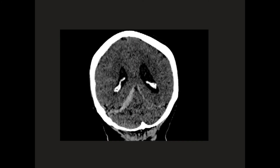This is a different patient. You would expect the falx cerebri to be here, and it's so thin it's almost imperceptible. This is a markedly thickened right tentorial leaflet, and this is a mildly thickened left tentorial leaflet. The thickening of the tentorial leaflet is a result of haemorrhage, and this is another example of acute subdural haemorrhage and what it can look like.